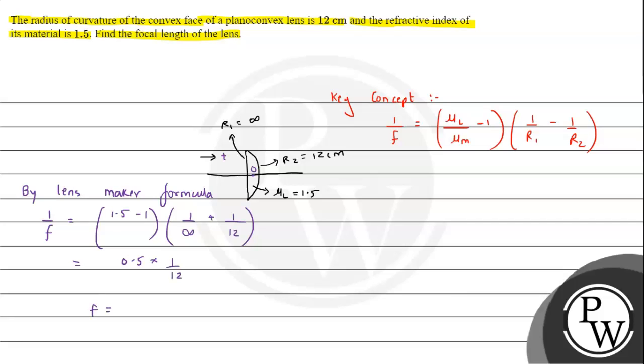So if we talk about f, the f value is 24 cm. So this is the focal length we are getting. I hope you understood the solution. All the best.